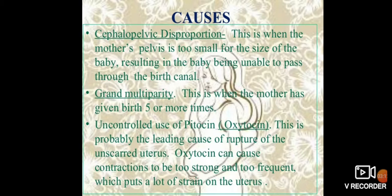Causes of uterine rupture include: cephalopelvic disproportion, where the mother's pelvis is too small for the baby, resulting in inability to pass through the birth canal; grand multiparity, where the mother has given birth five or more times; and uncontrolled use of oxytocin (pitocin), which is probably the leading cause of rupture of the unscarred uterus. Oxytocin can cause contractions to be stronger and too frequent, putting excessive strain on the uterus.